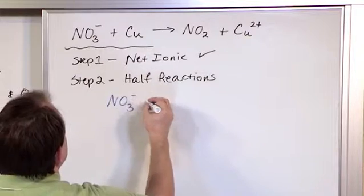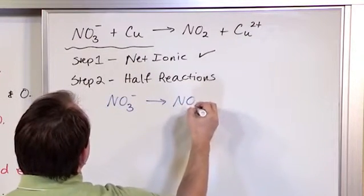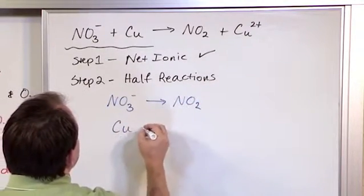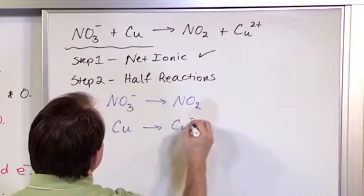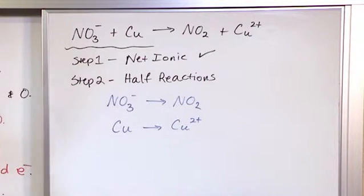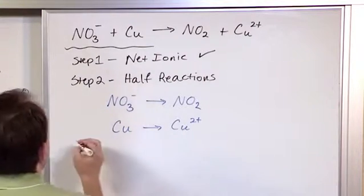So what we're going to have is NO3⁻ goes to NO2, and then we'll have Cu goes to Cu²⁺. So we're just writing everything down. We're not doing any balancing. We're not doing anything fancy.